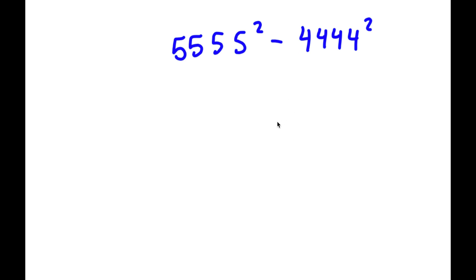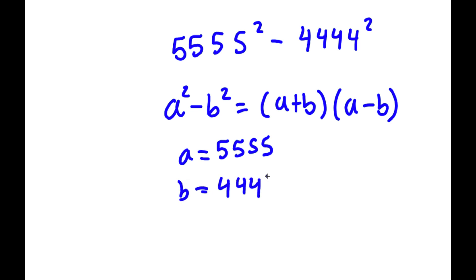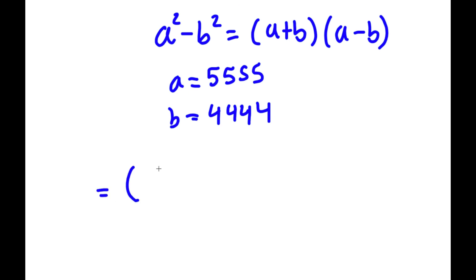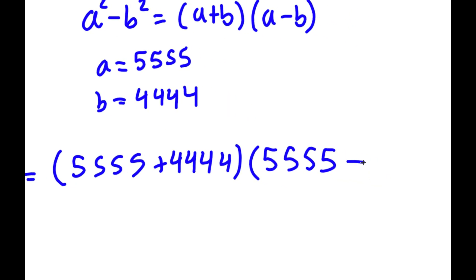In this problem I have 5555 squared minus 4444 squared. To solve this, if I have something in the form a squared minus b squared, it equals (a plus b) times (a minus b). Here a is 5555 and b is 4444, so this becomes (5555 plus 4444) times (5555 minus 4444).